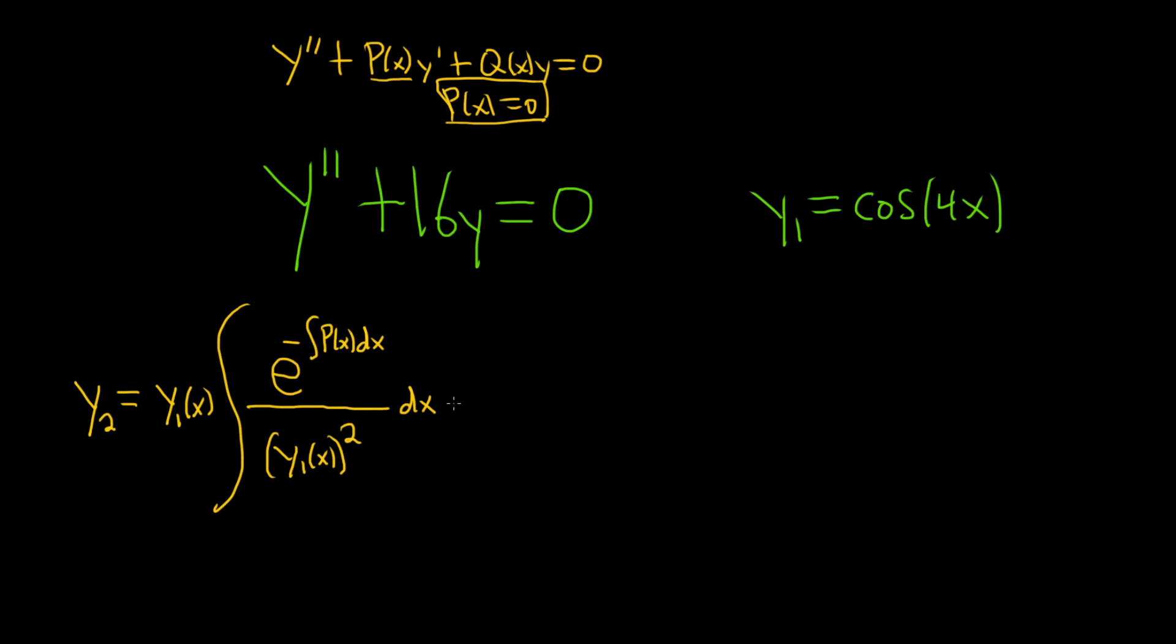Okay, so this is equal to the cosine of 4x, that's going to be our y sub 1. And then we have the integral of, big p is 0, so this is just e to the 0 dx. So we have the integral over cosine squared of 4x, and then we have our dx.